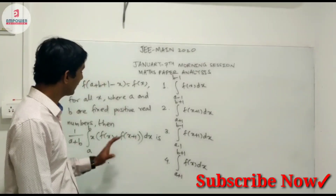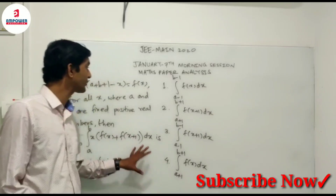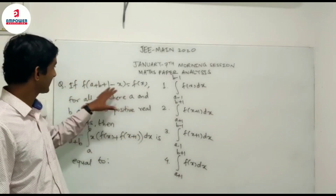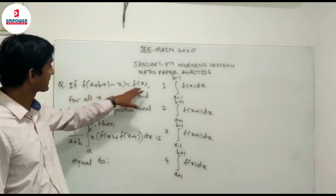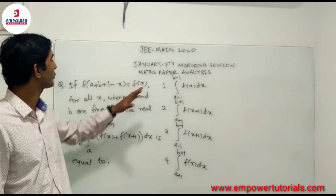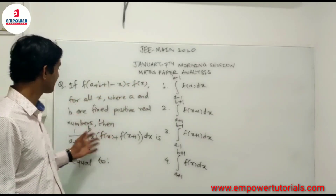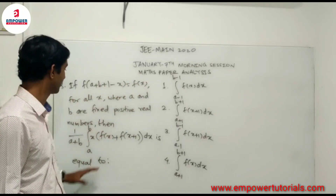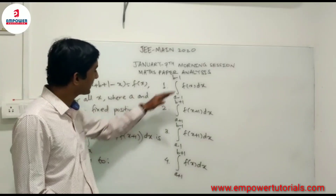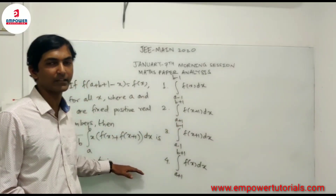The next question we are going to deal with is based on the properties of definite integrals. They have given the functional equation f(a + b + 1 - x) = f(x), with a and b as positive real numbers. They have given an integral and asked which integral is equal to this integral.